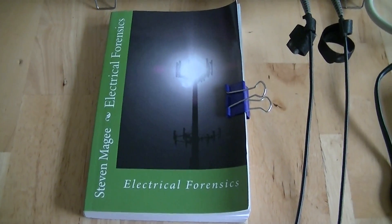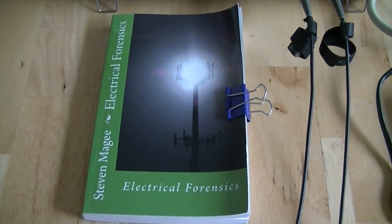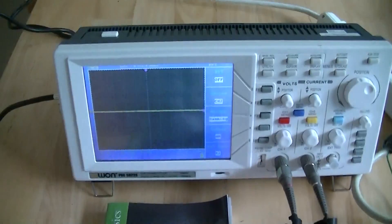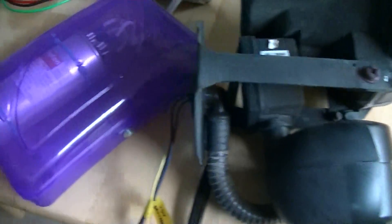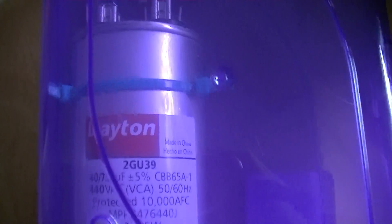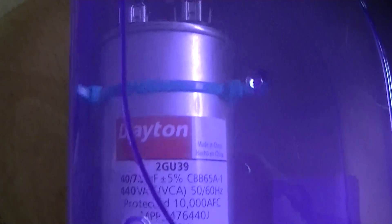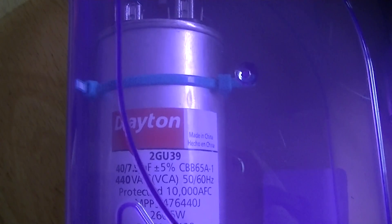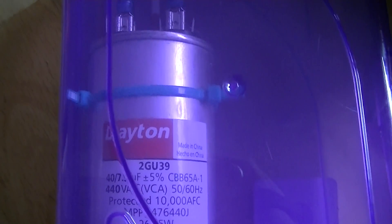Hi, my name is Stephen Magee and I'm the author of Electrical Forensics. We're here to do some electrical forensics work on these dirty electricity producing security lights, and we're going to see what actually happens when you add a 47.5 microfarad capacitor to the system.